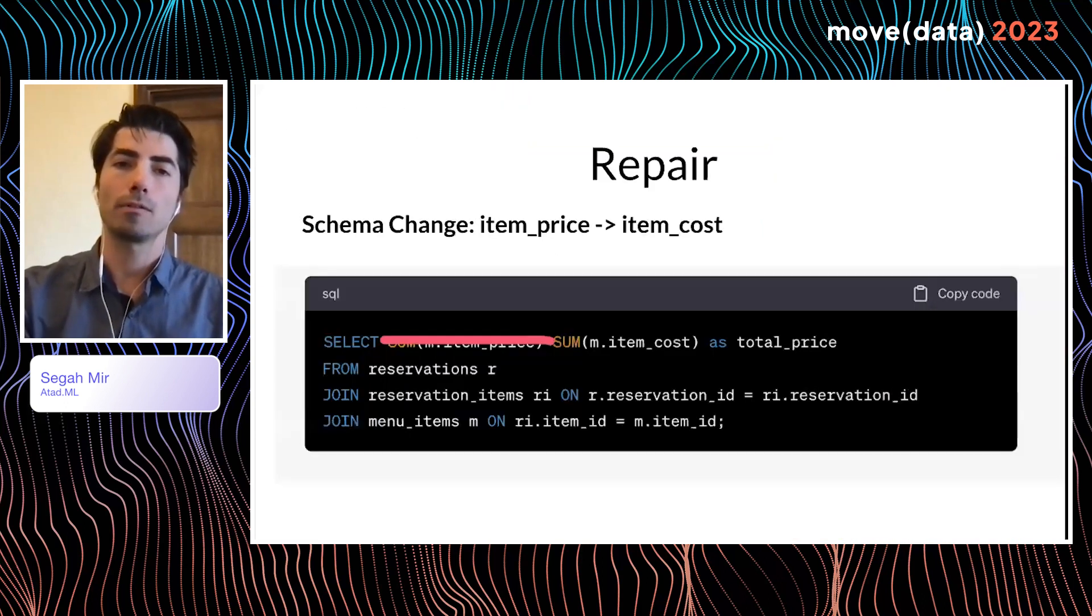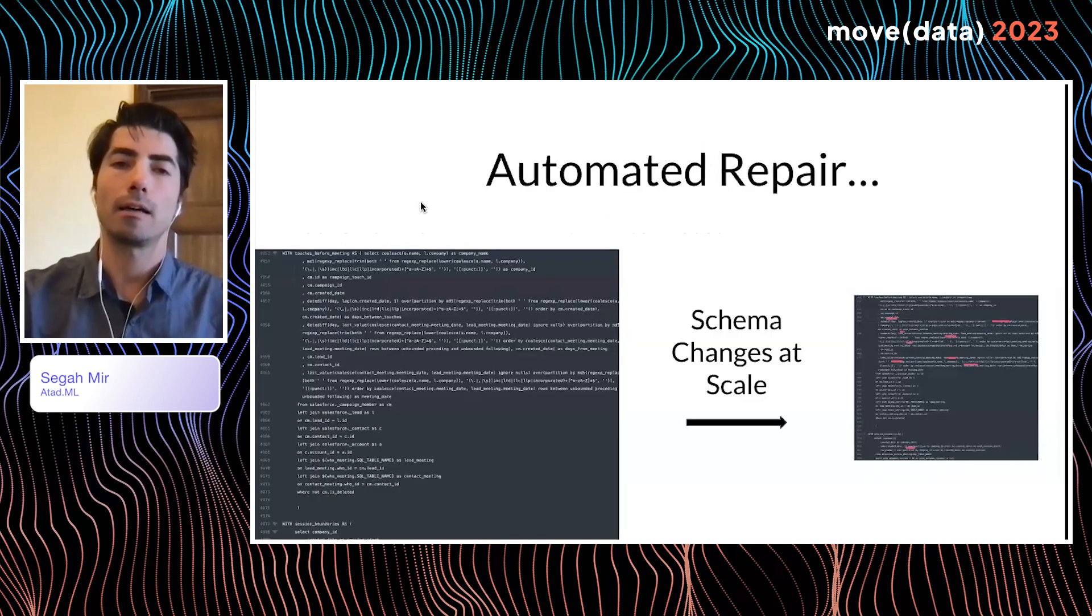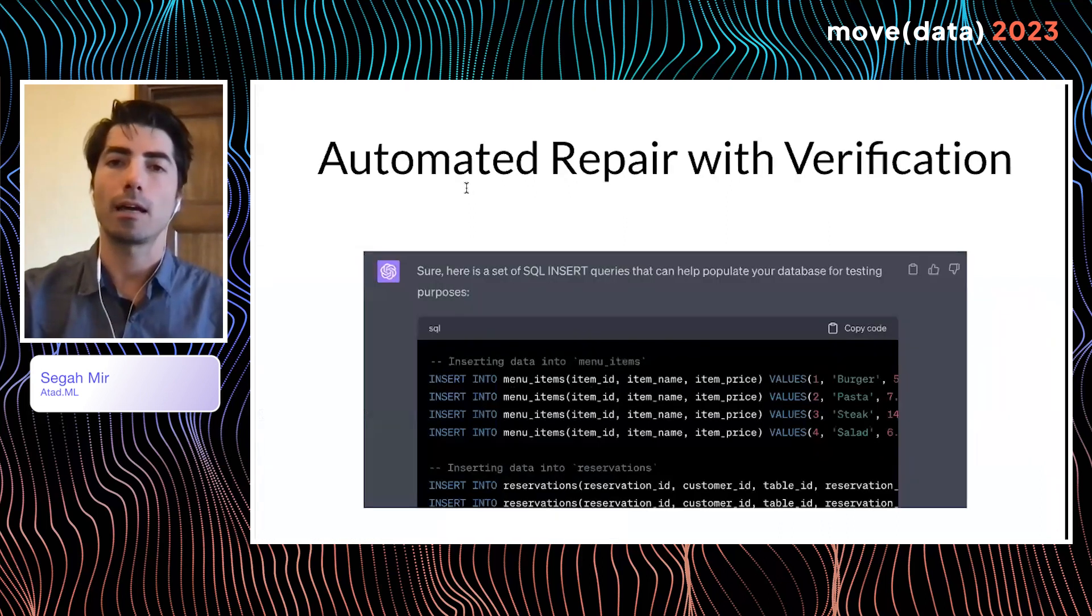But what about repair? Well, in order to actually have repair, while it seems simple enough, the schema changes can present the problem. Imagine you have a column called item price in the database, and the name of the column changes for some reason, maybe because of an ETL script, maybe because of some kind of open source change, it changes to item cost. And it seems simple enough. And in this case, we can probably just make a change manually. But real world scenarios are a bit more complicated for us humans to do repairs manually. So we need an automated solution.